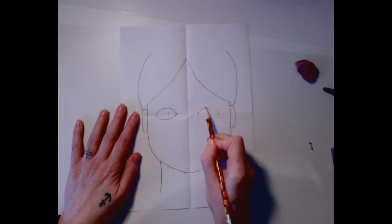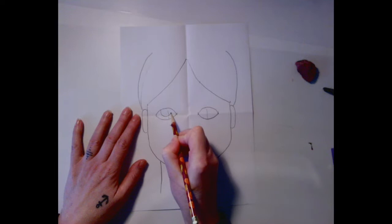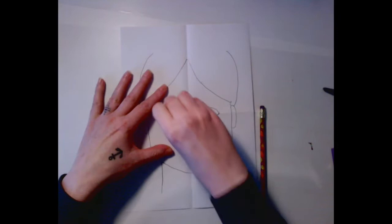Now we're going to make the iris. That's the colored part of your eye. You're going to make a half circle that comes from the top and goes down. You shouldn't touch the bottom line. You can also get rid of that middle line if you want to because you don't need it anymore.